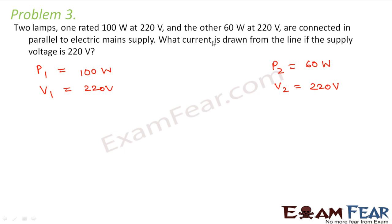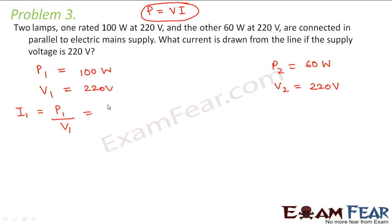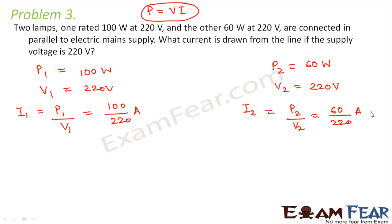So what current is drawn from the line if the supply voltage is 220 volts? Let us see how much current will flow through the first bulb. The current through it will be equal to P1 divided by V1, because power is given as the product of potential difference and current. So this will be equal to 100 divided by 220 amperes. Similarly, current drawn by the second lamp will be equal to P2 by V2, that is equal to 60 divided by 220 amperes.